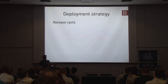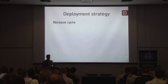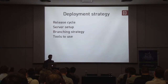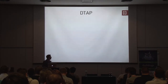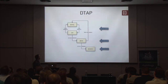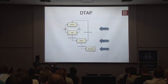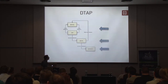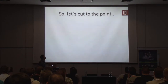When creating a deployment strategy, you should think about your release cycle, your server setup, your branching strategy, and of course the tools you're going to use. This is a basic DTAP setup: you have a development environment, you push your stuff to the repository, then it goes to test — of course if the build is not broken. If test is succeeding, you go to the acceptance stage. And then, if everything is right, you go to production. Remember this picture as we go along.